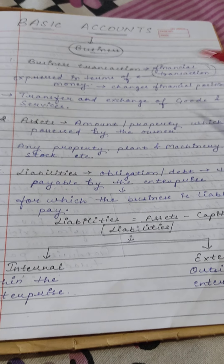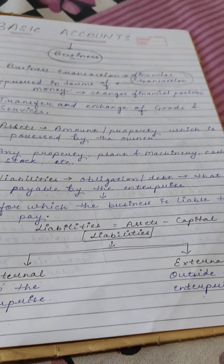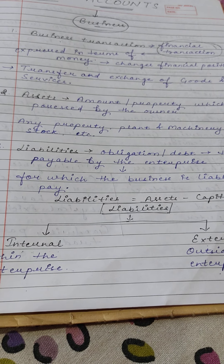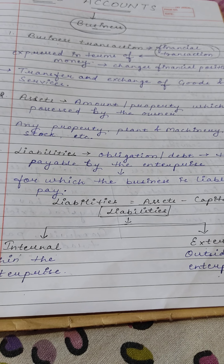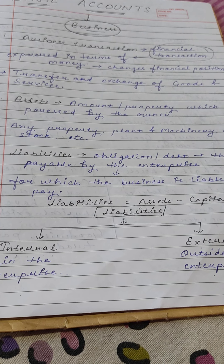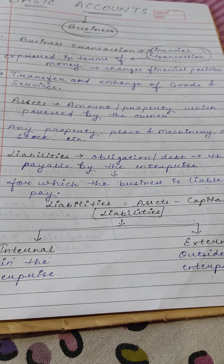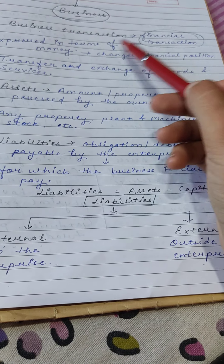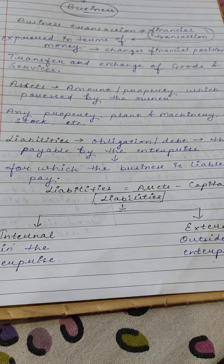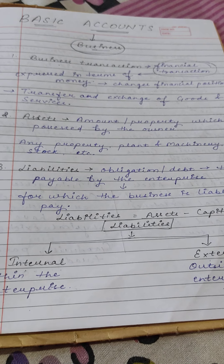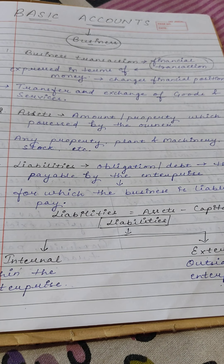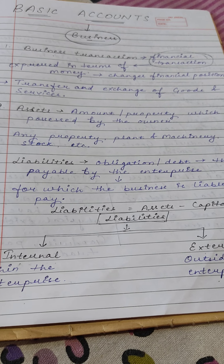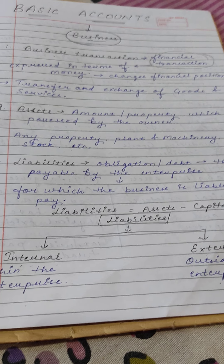Our first basic accounting term is business transaction. Business transaction has another name: financial transaction. Business transactions are those transactions which are expressed in terms of money and which change the financial position of a business — meaning profits may increase or losses may increase.